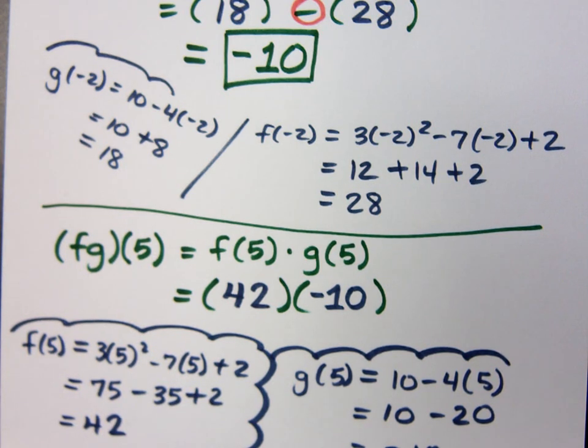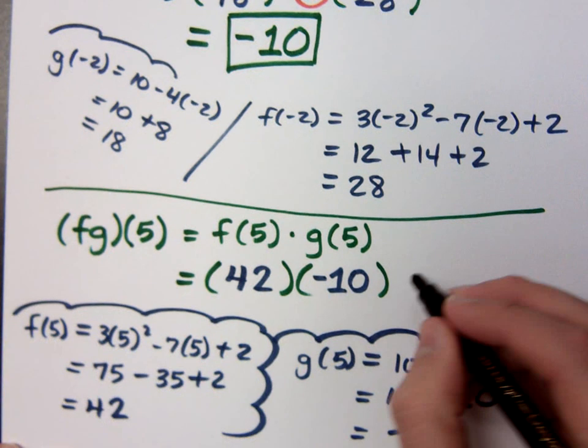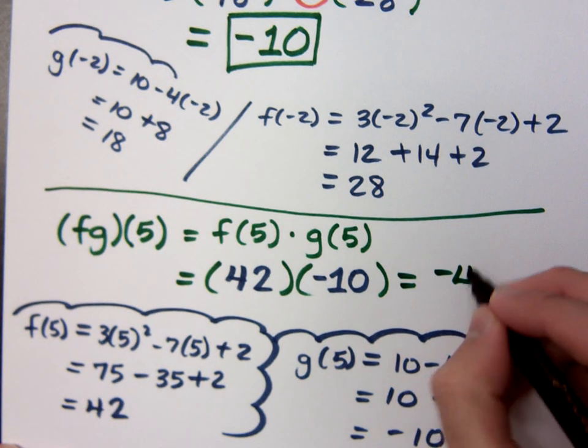42 times negative 10 is what? Negative 420.